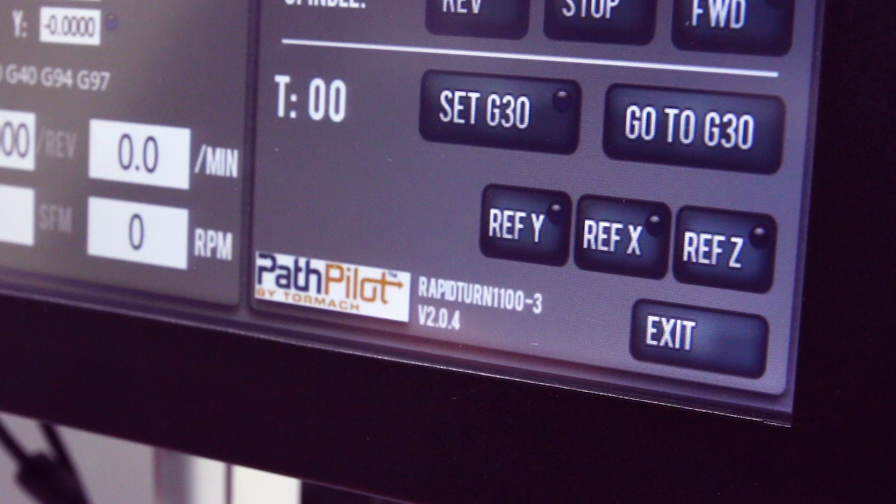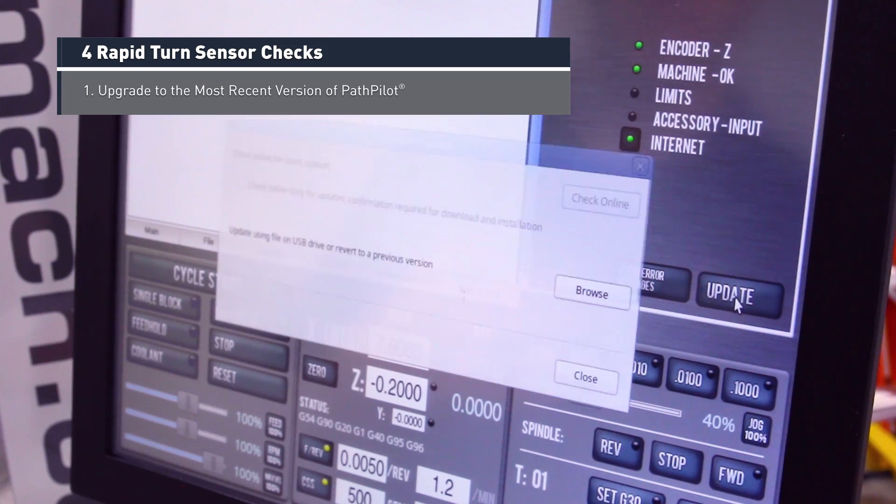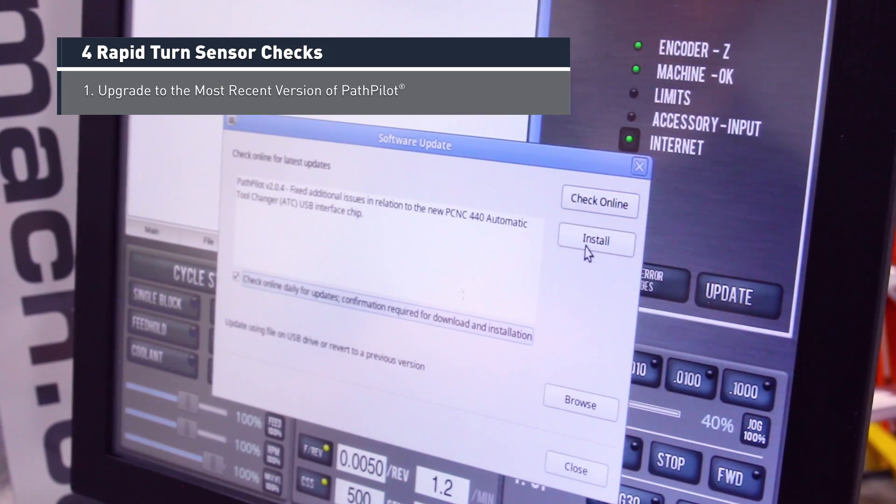So there's four simple checks that we can perform. The first one being just check what version of PathPilot you're on. Make sure you're on the most current version, do the update, and verify that everything is on the current version.